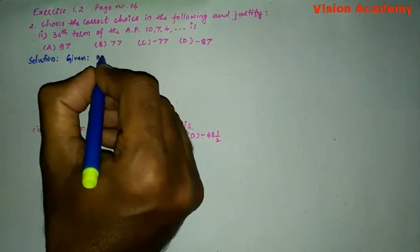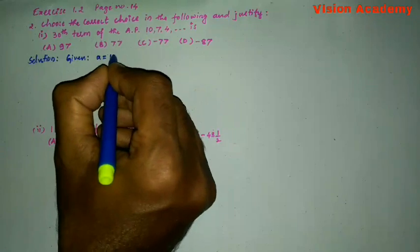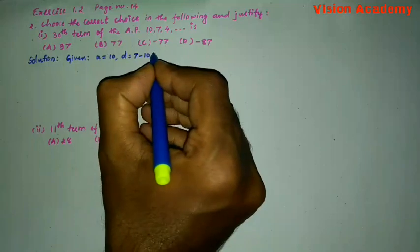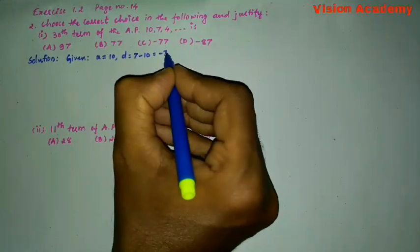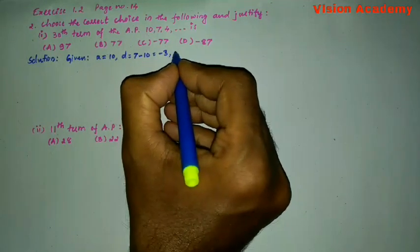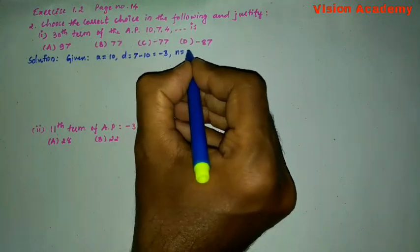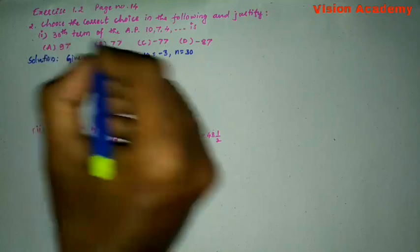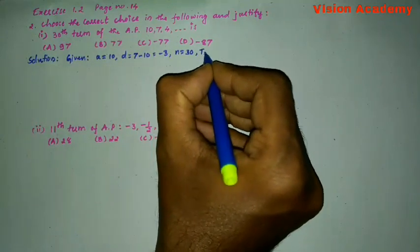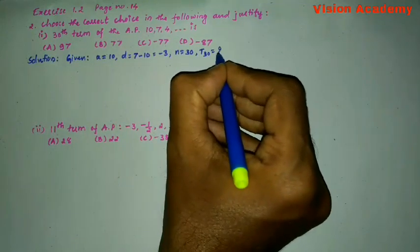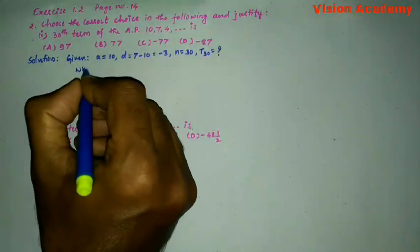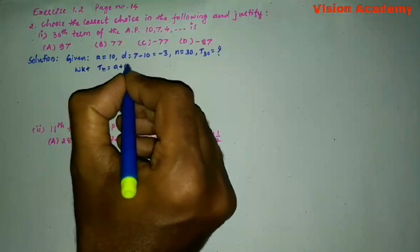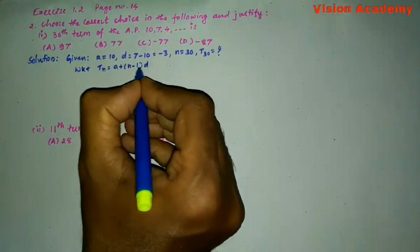The first term A is equal to 10 and the common difference D is equal to 7 minus 10, which is equal to minus 3. And N is equal to 30 because the 30th term of the AP is to be determined. So we will write T30 is equal to what?